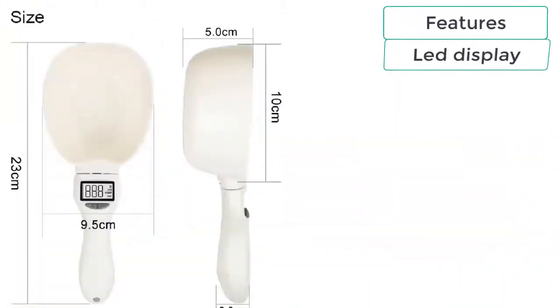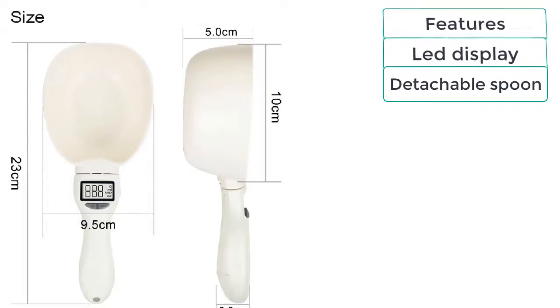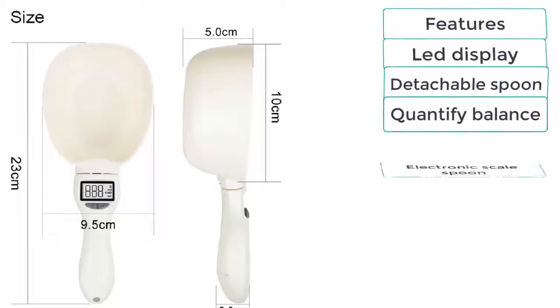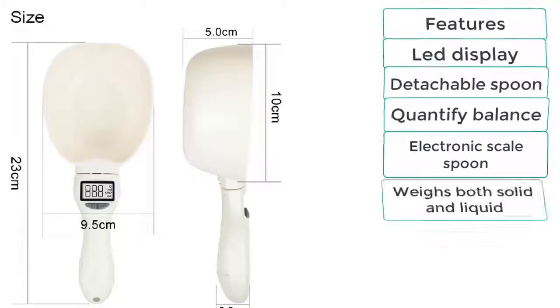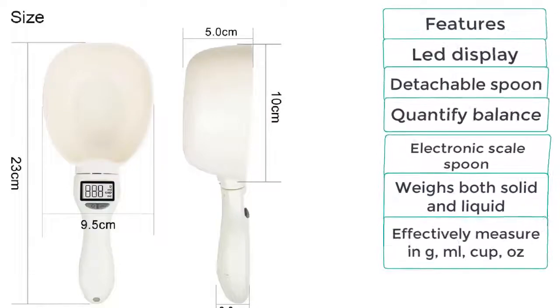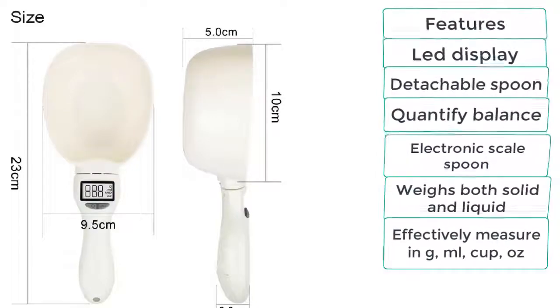Features of the dog food measuring cup include: LED display, detachable spoon, quantify balance, electronic scale spoon, weighs both solid and liquid, and effectively measures in grams, milliliters, cups, and ounces.